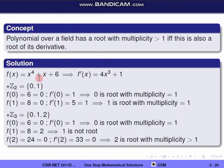Taking f(x) = x^4 + x + 6, we check if any root of f(x) is also a root of its derivative. The derivative is f'(x) = 4x^3 + 1. Now we check the options.